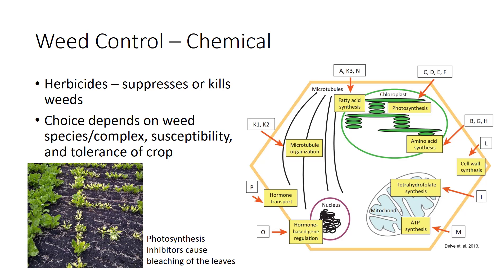Chemical weed control involves the use of herbicides to suppress or kill weeds. There are many different herbicides available, and some knowledge about how particular herbicides work is necessary before applying them. Herbicides kill plants by interfering with various vital plant processes — for example, they may interfere with photosynthesis, inhibit root or shoot growth, or induce abnormal plant tissue development. Often, closely related herbicides exhibit the same mode of action, but there are exceptions. Knowing the mode of action helps in recognizing damage symptoms caused by a specific herbicide on target weeds as well as on non-target plants. Modes or mechanisms of action for specific herbicides can be found on the Herbicide Resistance Action Committee website or from the Weed Science Society of America.